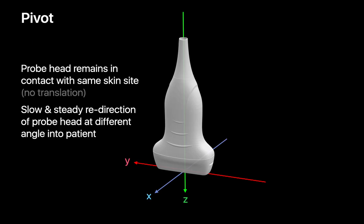With pivoting motions, the head of the probe remains in contact with the same point on the patient's skin surface, but the probe orientation pivots so that the ultrasound beam is fired into the patient at different angles.